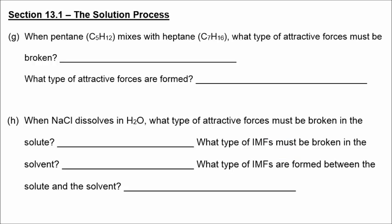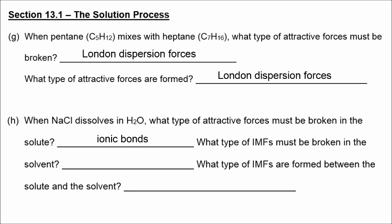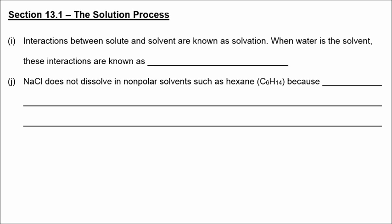The two substances being mixed in Part G are pentane and heptane. These are both non-polar hydrocarbons, so London dispersion forces are all that we have going on here. We'd have to break some London dispersion forces between these molecules separately, and then form London dispersion forces between pentane and heptane as the mixture is produced. For sodium chloride, we're breaking ionic bonds in the solute. Since water is the solvent and has mostly hydrogen bonds as the dominant force, those would be broken, and then we form ion-dipole forces as the solution is produced. Interactions between solute and solvent are known as solvation.